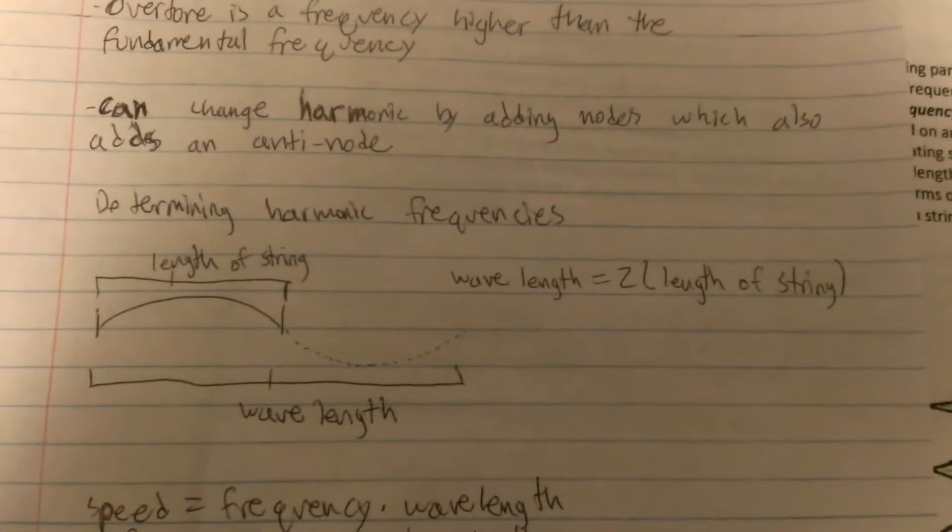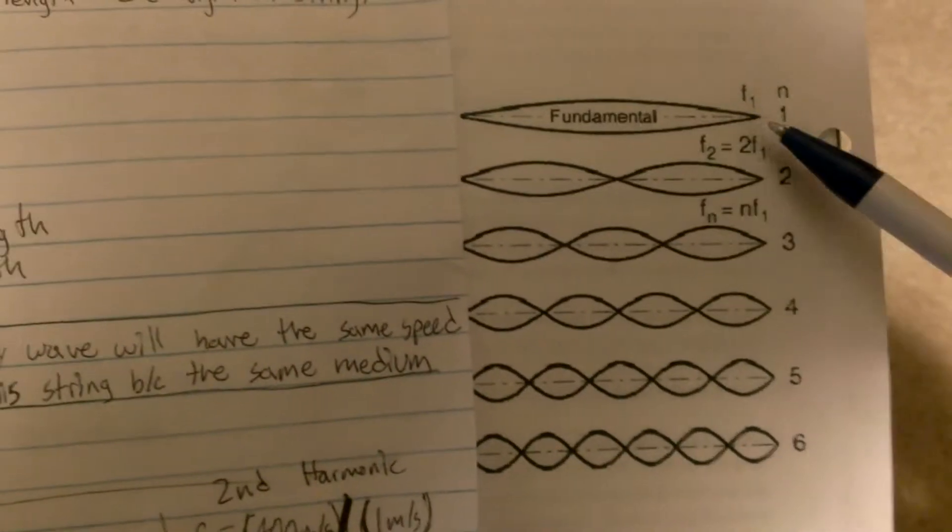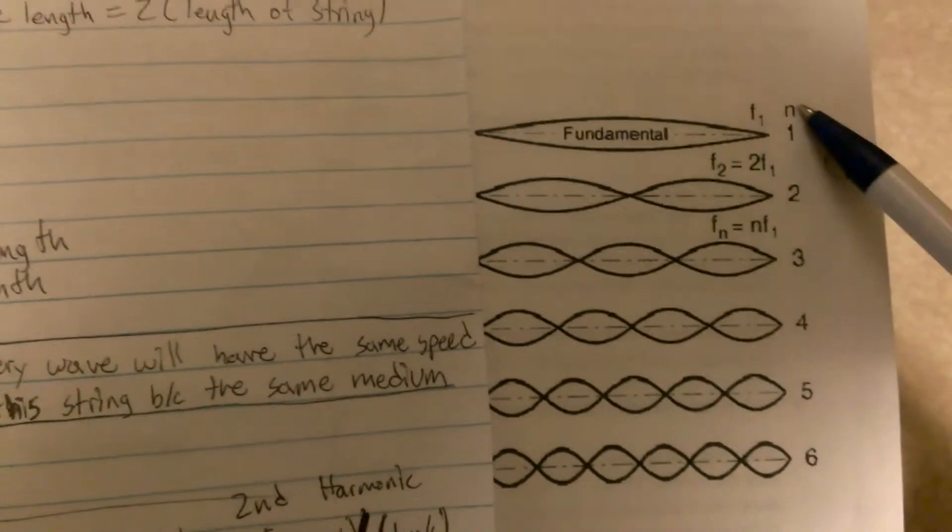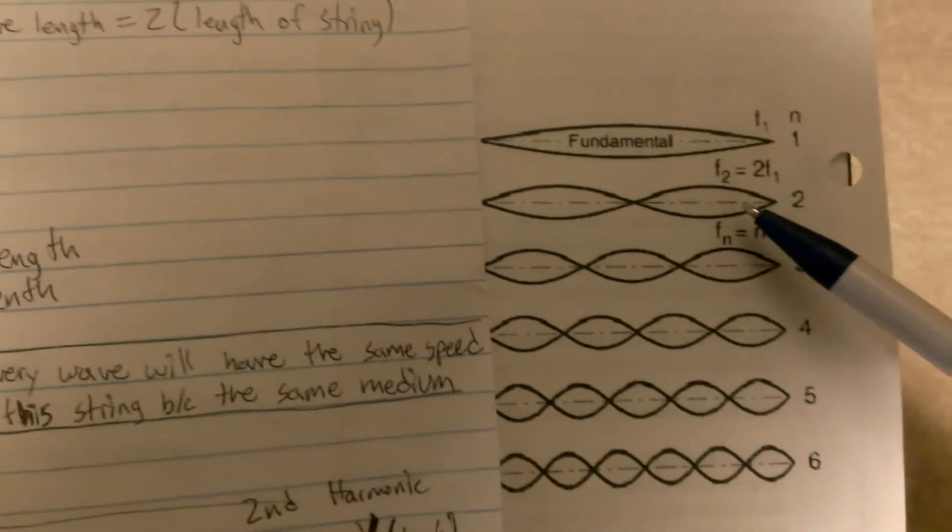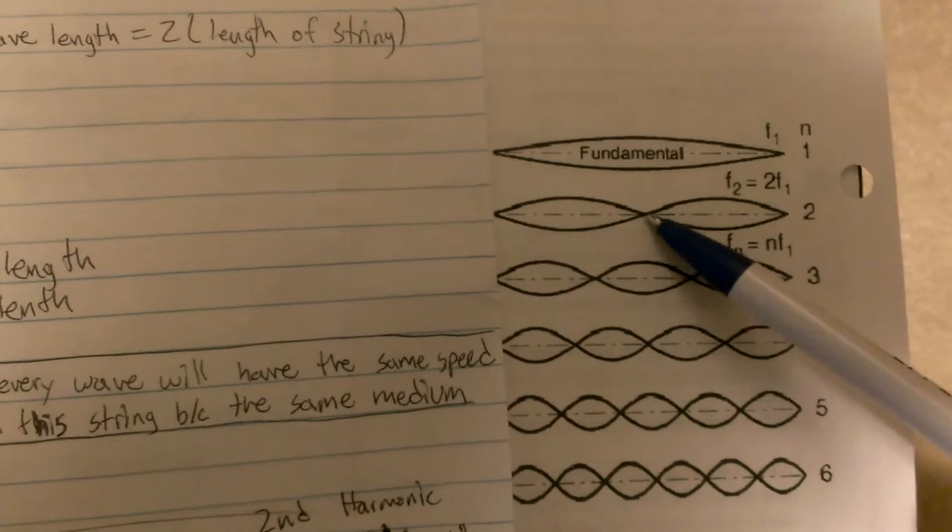Now, to change a harmonic, you change it by adding nodes. So you see here, you only have these two nodes. And to get to the next harmonic, you now have three, because you added a node right here.